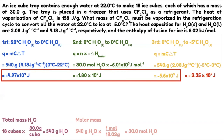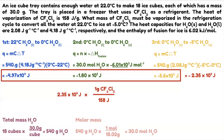The negative sign means it's the amount of heat you need to release. But this is not the final answer — we need the mass of dichlorodifluoromethane. Using 2.35 times 10 to the 5th joules (positive, because we can't have negative mass) divided by 158 joules per gram — cancel the joules — gives 1.49 times 10 to the 3rd grams of CF₂Cl₂. That's the mass that must be vaporized.